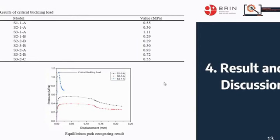From this result on various types of geometry, the ring-stiffened cylinder S3-1A shell has a critical buckling load of 1.11 MPa, higher than that of the unstiffened cylinder shell and stringer-stiffened cylinder shell.